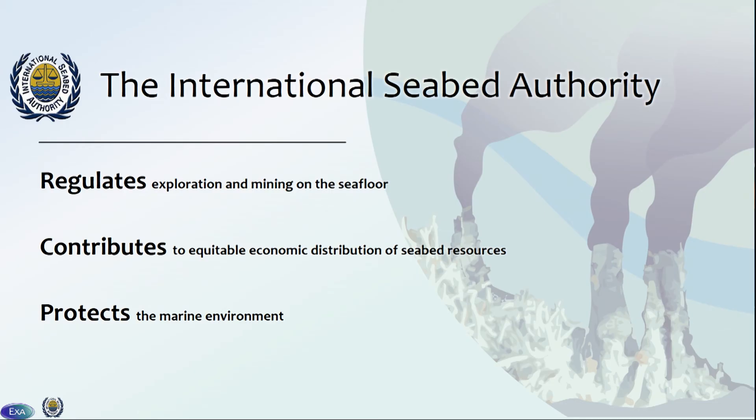The International Seabed Authority is an agency of the United Nations based in Kingston, Jamaica, and their job is to regulate the exploration and mining on the seafloor in international waters. The need for a seafloor regulatory agency arose in 1982 out of the Convention of the Law of the Sea. There are currently 168 member states signed on, and it's interesting to note that the United States is not part of that. The ISA makes licensing decisions so that a portion of all profits from mining in international waters go towards benefiting developing states that don't have the financial means to mine on their own. Another mission is to study, protect, and preserve the marine environment through no-mining zones and environmental impact assessments.